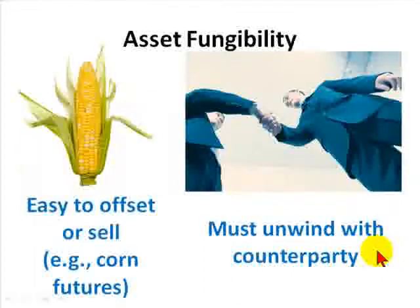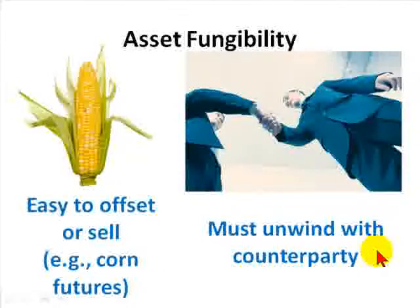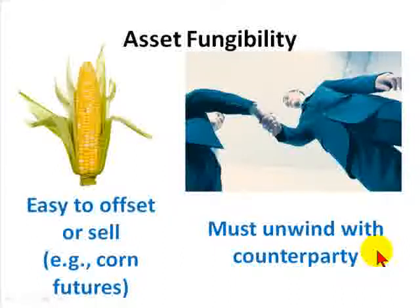The final factor is what Culp calls asset fungibility. Asset fungibility refers to whether the asset can be easily offset or whether it must be unwound with the counterparty. The classic example of an easy-to-offset asset is a futures contract on a commodities exchange — there is a central clearinghouse, and it is easy to close out the position. At the other end of the spectrum is an over-the-counter bilateral contract, such as a credit default swap, where there is no centralized exchange and the asset must be unwound with the specific counterparty. As Culp notes, if the counterparty knows there are no easy offsets, this can give them bargaining leverage, increasing the cost of liquidation.